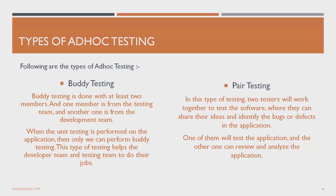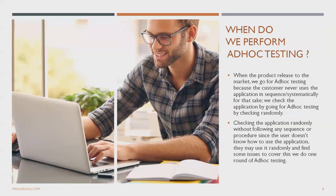The second type is pair testing. In pair testing, two testers are involved to test the complete software — they share ideas and find defects in the application. One of them tests the application while the other reviews and analyzes it. Depending on the team size, each functionality has two people assigned: one doing the complete testing and the second reviewing the application. This is called pair testing.